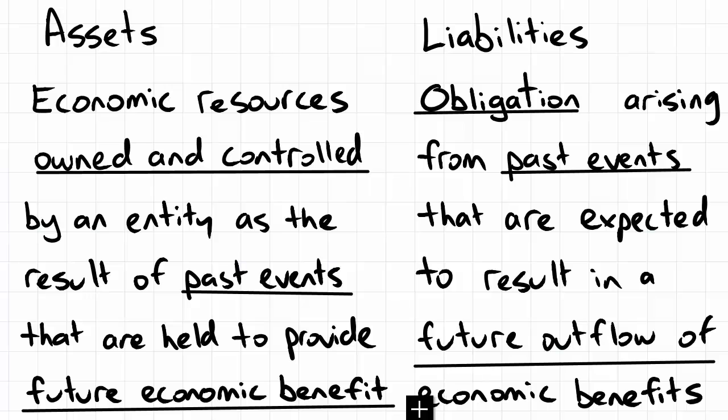Instead of expecting to receive a future economic benefit, with a liability you are expecting to eventually pay out an economic benefit to somebody else. This involves an outflow of economic benefits, whereas assets involve a future inflow — so the two mirror each other. The most common form of liability is a loan: you borrow money and have an obligation to pay it back in the future. The loan arose from the past event of signing a contract, and in the future you are expecting to pay the loan back — that is the future outflow of economic benefits.